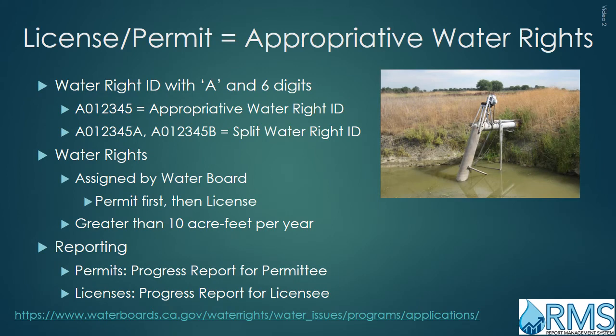Licenses and Permits are types of Appropriative Water Rights. They can be identified by a Water Right ID beginning with an A, usually followed by six digits. Some licenses and permits have been split and will contain additional characters. Licenses and Permits are agreements with the Water Board that include provisions such as when and how much water may be diverted, what the water may be used for, and where the water may be used. Often a permit is granted followed by a license. These water rights are generally for diversions that are greater than 10 acre-feet of water per year. Appropriative Water Right users file progress reports for permittee or licensee to record their annual water diversions.